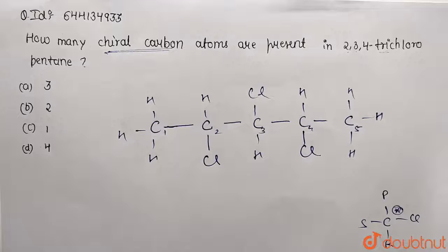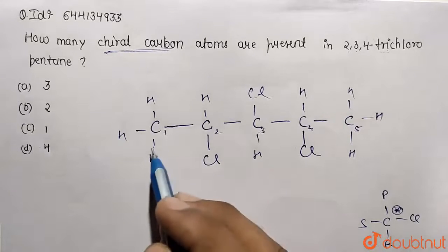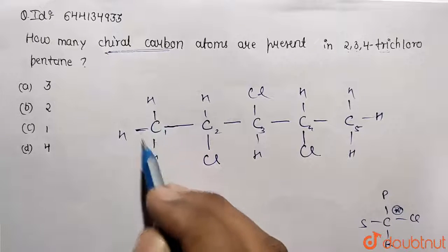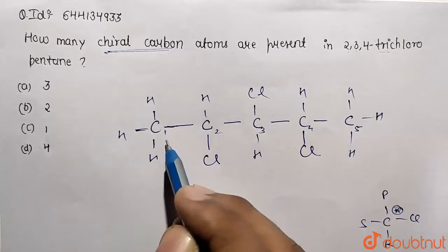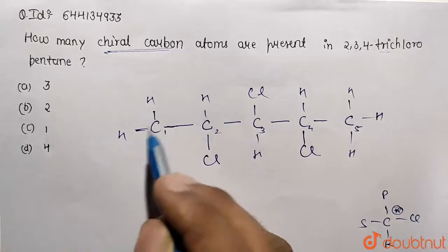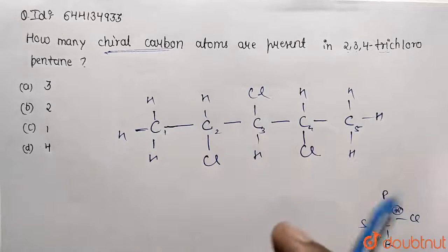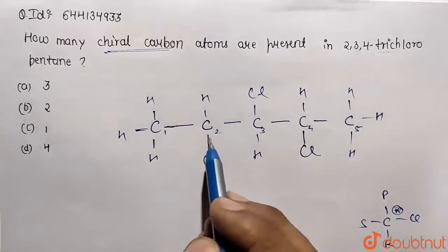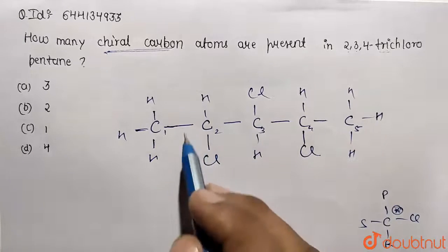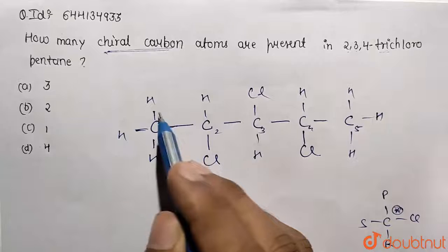Let's check carbon 1. It contains three hydrogens on the same side, so it is not going to be a chiral carbon, because all four valencies must be different to make it chiral. Now checking carbon 2: it has a methyl group on one side.